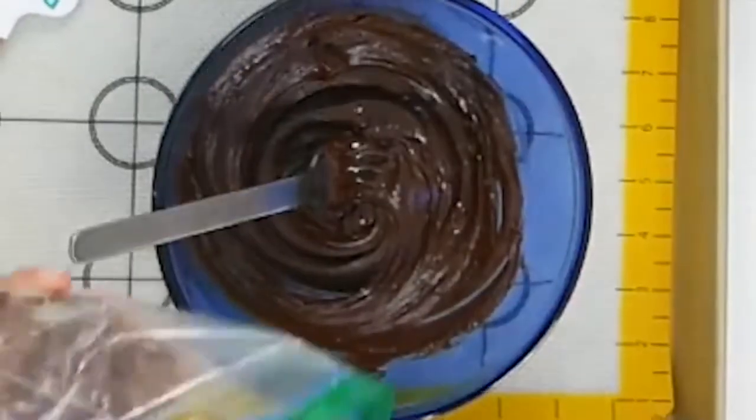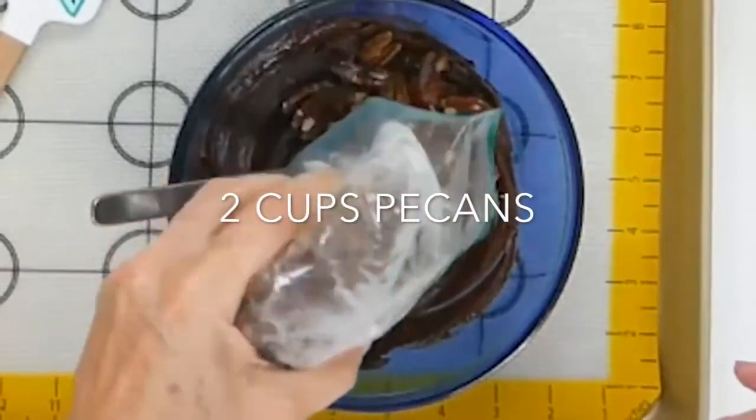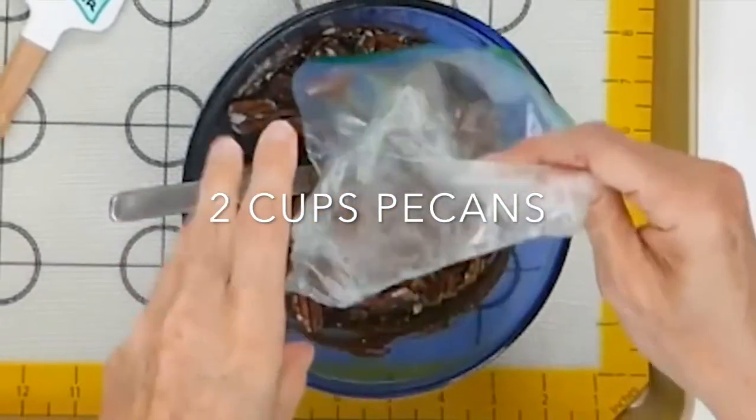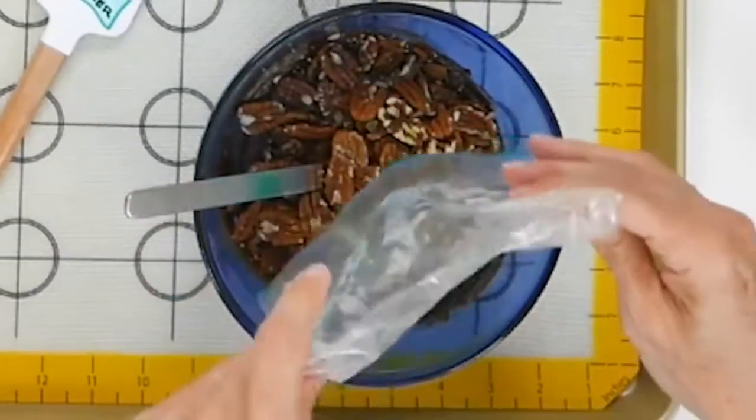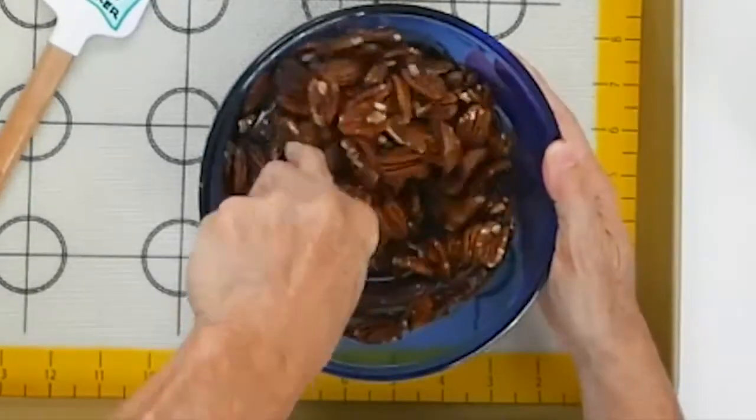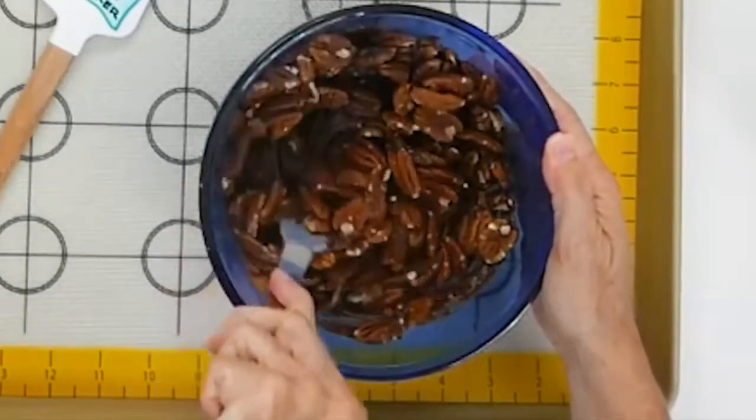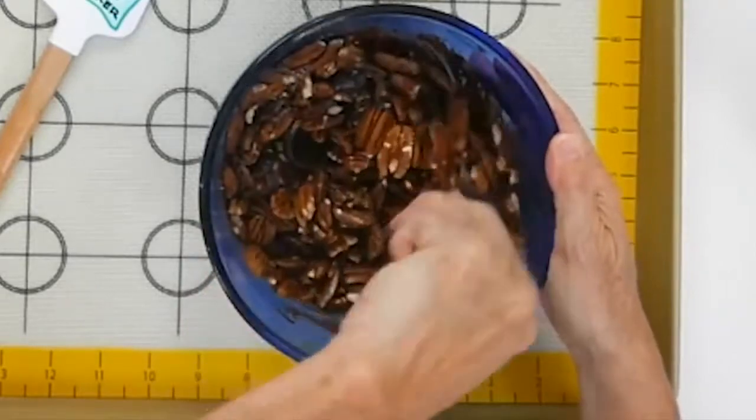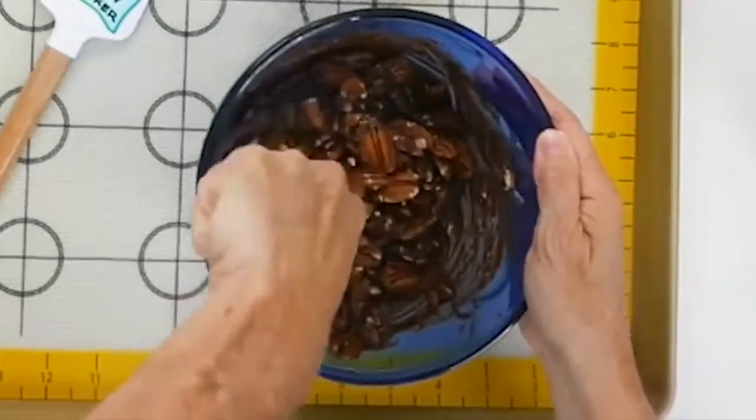Then just drop your pecans. Mix it with a fork again and just place little mounds on a baking sheet over a silicone non-stick mat or over foil.